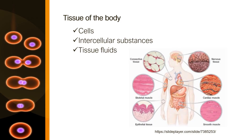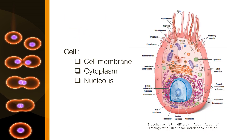As we know, the tissue in the human body consists of cells, intercellular substances, and tissue fluids. The cytology videos will focus on the cells. Cells are made up of three main structures: cell membrane, cytoplasm, and nucleus.